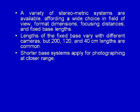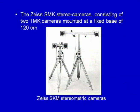The lengths of the fixed base may vary with different cameras, but 200, 120, and 40 centimeter lengths are common. Shorter base systems apply for photographing at close range. This particular slide shows the layout of a Zeiss SMK stereometric camera system consisting of two TMK cameras mounted at a fixed base of 120 centimeters.